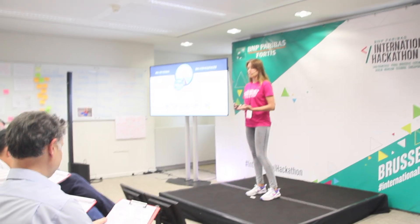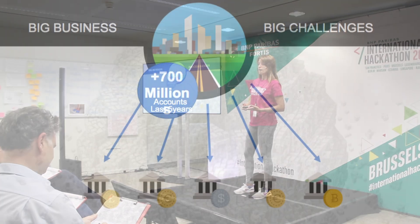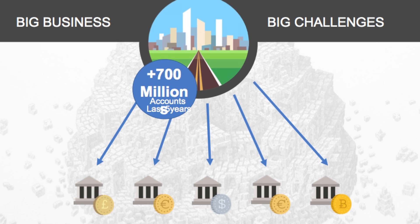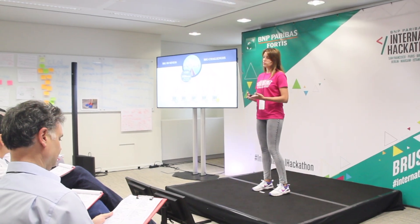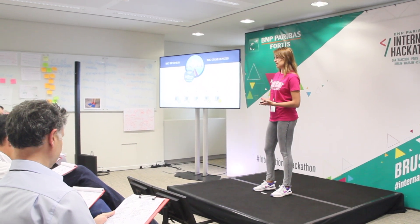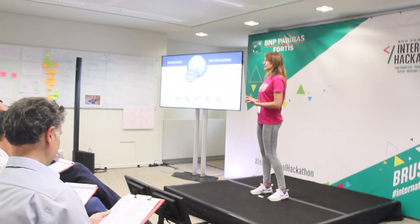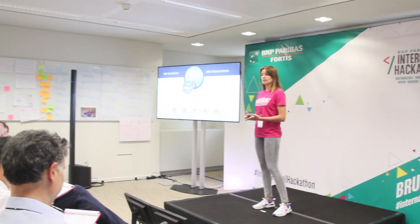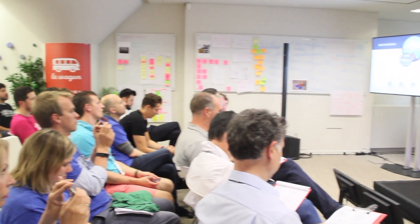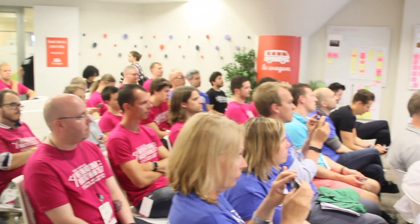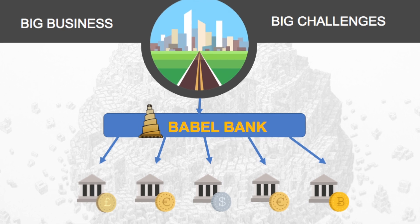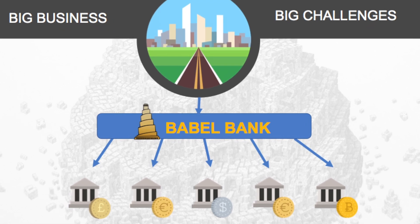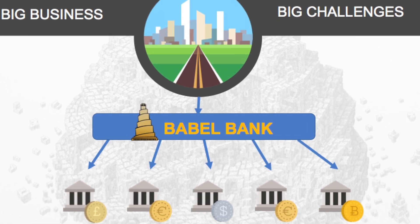Think big! International companies nowadays have multiple accounts in different banks and currencies, and they face complexity when doing cash management and balance optimization. Statistics show that more than 700 accounts have been created over the last five years, making it even more complicated. The world is becoming global, so we need a holistic approach for an efficient cash management system.